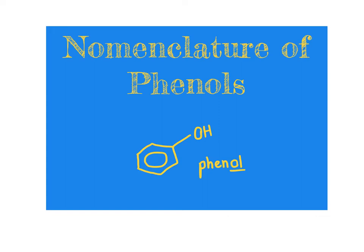In the last unit, we looked at naming alcohol molecules using common nomenclature and IUPAC nomenclature. In this video, we take a look at how to go about naming a group of molecules referred to as phenols. Phenols are molecules that have an aromatic ring — a six-membered ring with alternating single and double bonds, abbreviated with a hexagon with a circle inside to illustrate resonance among the pi bonds — directly connected to a hydroxy group.